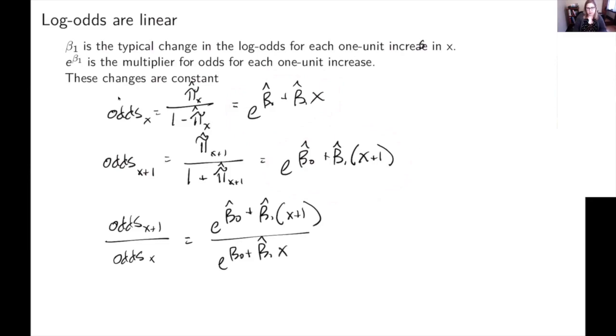And now I have to remember some of my rules, like log rules and exponent rules, which again, you probably had in some high school math class. So you may recall that if you are adding inside an exponent, that's like multiplying with the same base. So I can do e to the beta 0 hat times e to the beta 1 hat X plus one, and these two things are equal. And then I can do the same thing on the bottom e to the beta 0 hat times e to the beta 1 hat X. And then I can just cancel out those e to the beta 0 hats.